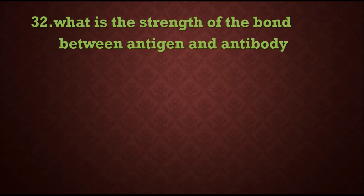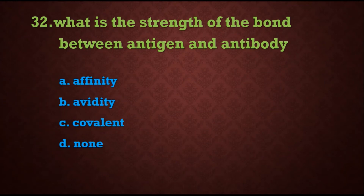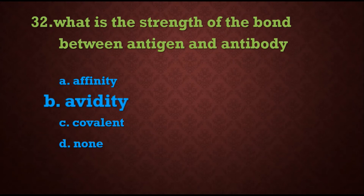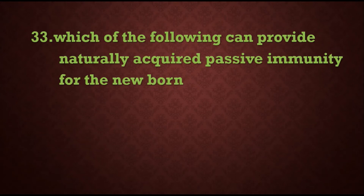Question 32: What is the strength of the bond between antigen and antibody? Options are: A) affinity, B) avidity, C) covalent, D) none. The answer is B) avidity — the strength of the bond between antigen and antibody is called avidity.